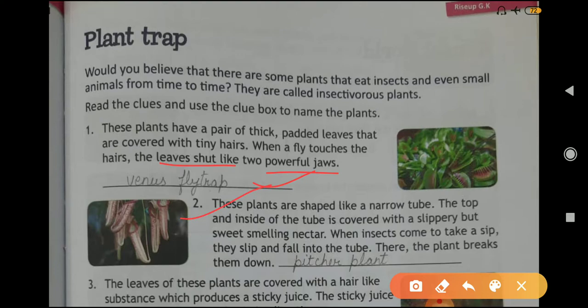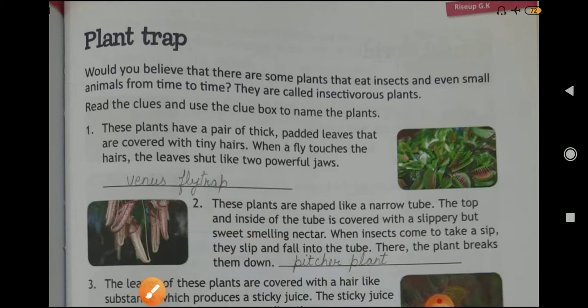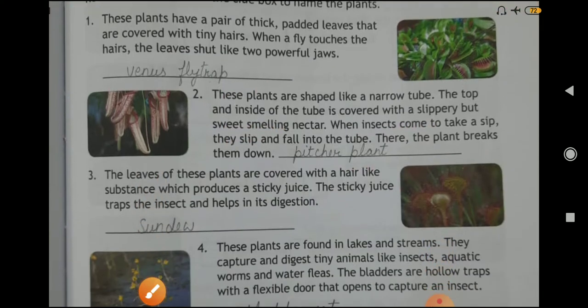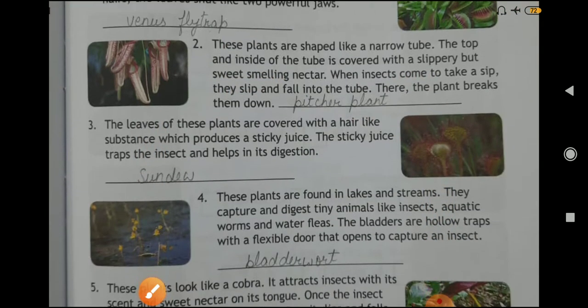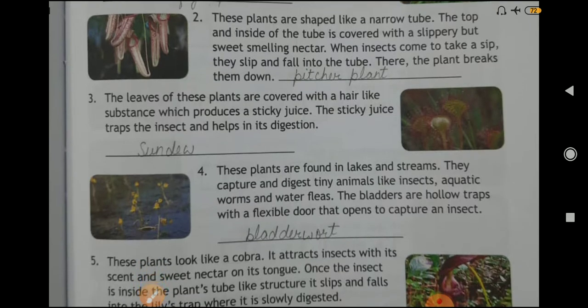Question number two: these plants are shaped like a narrow tube. The top and inside of the tube is covered with a sweet smelling nectar. When insects come to take a sip, they slip and fall into the tube, where the plant breaks them down. Answer: Pitcher Plant.